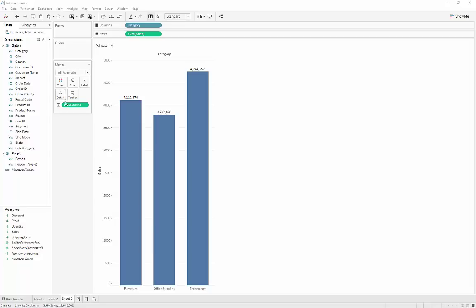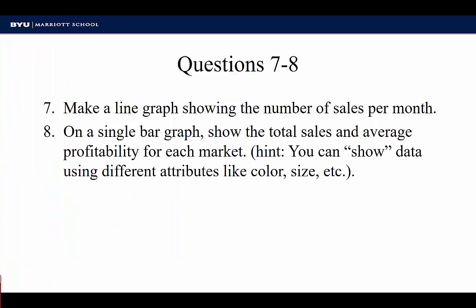That covers the Marks card — you'll use it a lot so it pays to become very comfortable with it. To that end, here are two more tasks. Number seven: make a line graph showing the number of sales per month. Number eight: on a single bar graph, show the total sales and average profitability for each market. Hint — you can show data using different attributes such as color or size. I don't want two graphs or two lines; just a single graph using something like color or size to show profitability alongside sales. Go ahead and pause and practice these, then we'll go over the solutions.